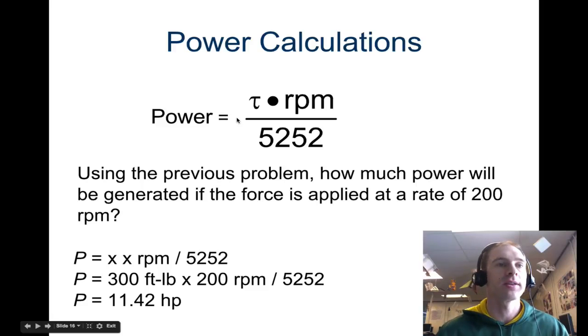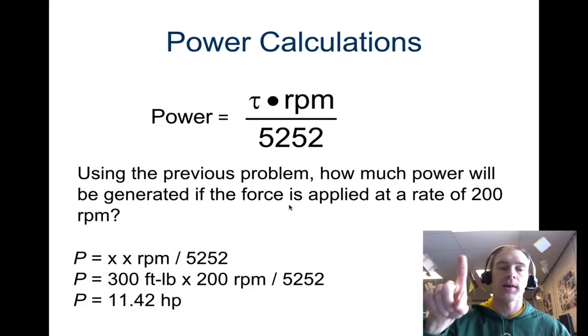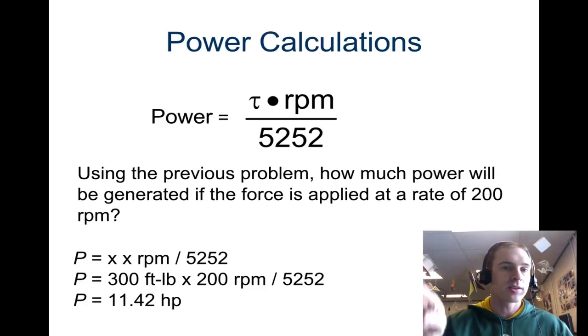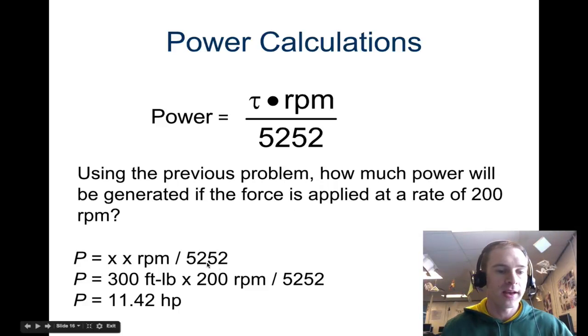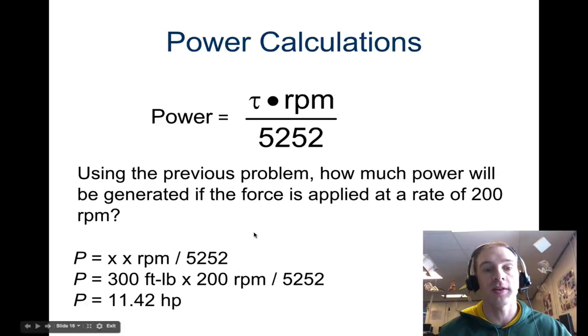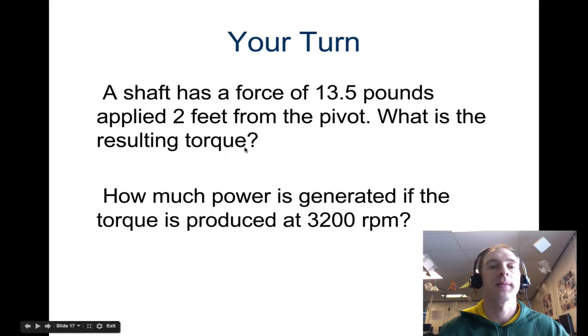Moving on, we have power calculations. So this should be the last equation that you have. It's torque times RPM divided by this constant of 5252. So using the previous problem, how much power will be generated if the force is applied at a rate of 200 RPM? So if you're applying that downward force at 200 revolutions per minute. We take torque times RPM divided by 5252. Well, in the previous problem, it was 300 times 200 RPM divided by 5252 is 11.42 horsepower. So that's how you calculate rotational power, or torque power.